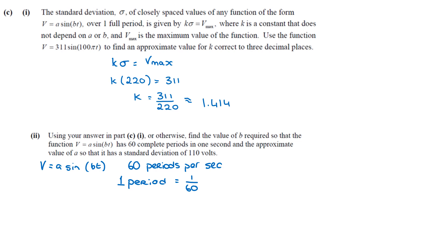And the value of B, this is the formula you need to know, is given by 2 pi because we're dealing with radians divided by the period. And the value of B is 2 pi divided by 1 over 60, which is 120 pi. And that is approximately 377.